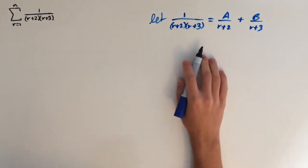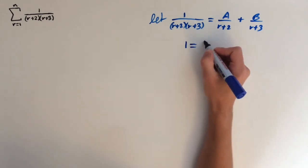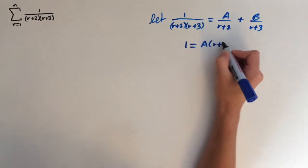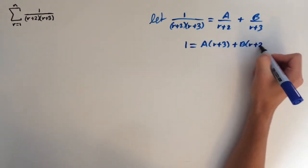So now I'm going to multiply both sides by the denominator here of this fraction. So we're going to get 1 equals a times r plus 3 plus b times r plus 2.